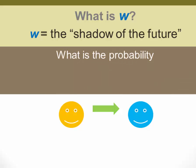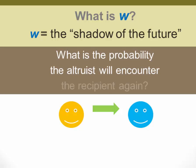The question that W answers is what is the probability that the altruist who received that benefit will encounter the recipient again so that they have the opportunity to reciprocate. So what we're saying is that orange acted altruistically towards blue. W refers to the probability that orange and blue will meet again, and blue will have the opportunity to reciprocate.